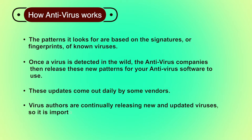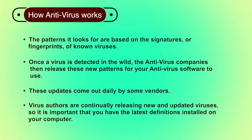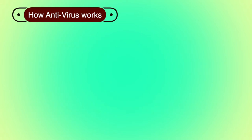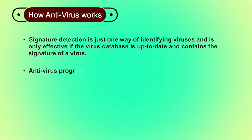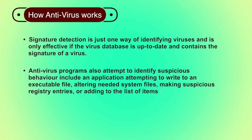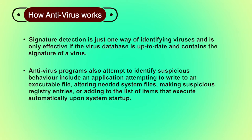Virus authors continually release new and updated viruses, so it is important to have the latest definitions installed on your computer. Signature detection is just one way of identifying viruses and is only effective if the virus database is up to date and contains the virus signature. Antivirus programs also attempt to identify suspicious behavior, such as an application trying to write to an executable file, altering needed system files, making suspicious registry entries, or adding items to the list that execute automatically upon system startup.